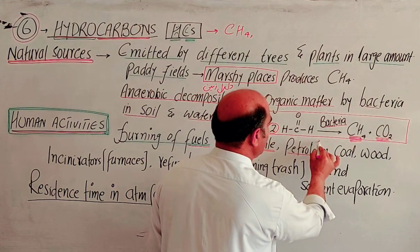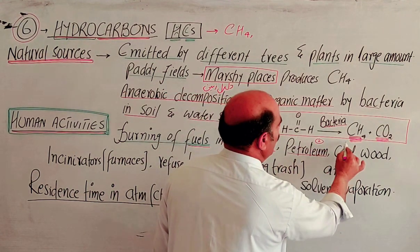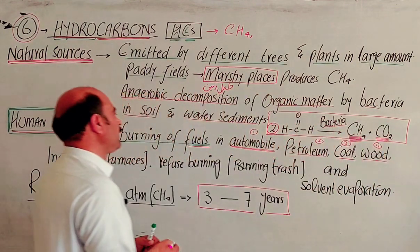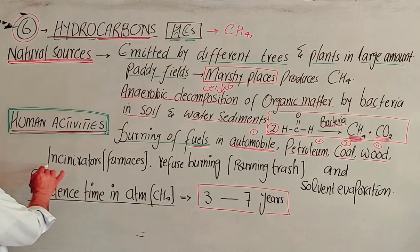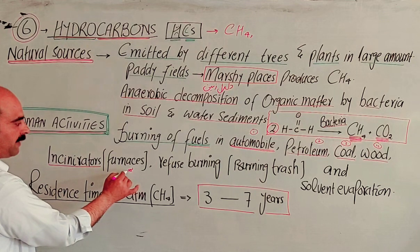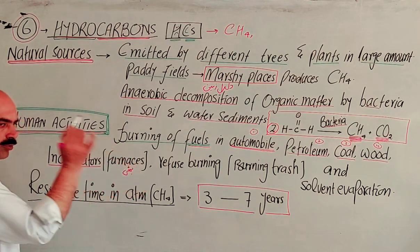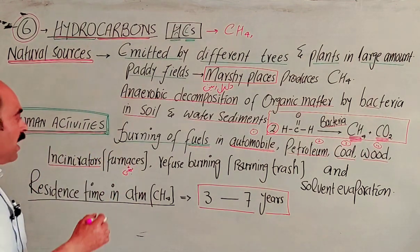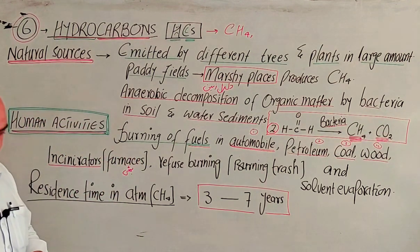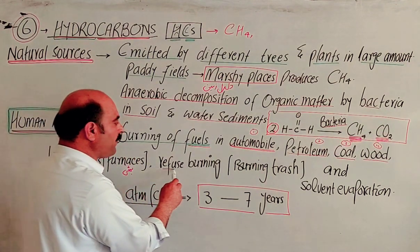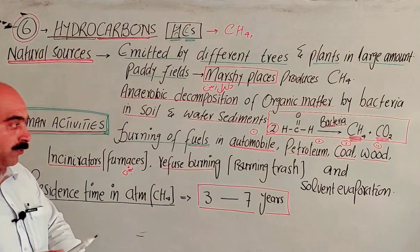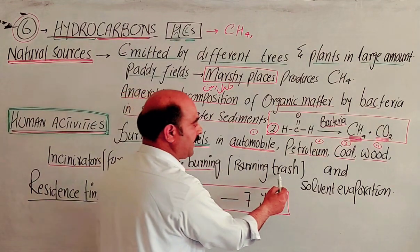Fuels that are burned include petroleum, coal, and wood. Incinerators, furnaces, and burners are also sources. Another anthropogenic source is the burning of refuse, meaning the burning of trash. When trash or garbage is burned, hydrocarbons are released.